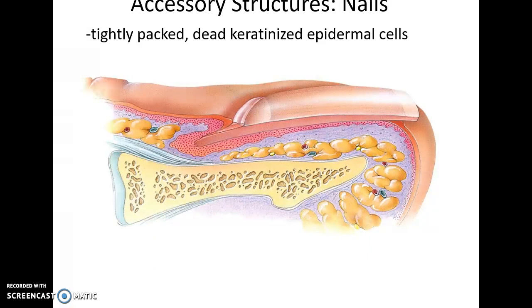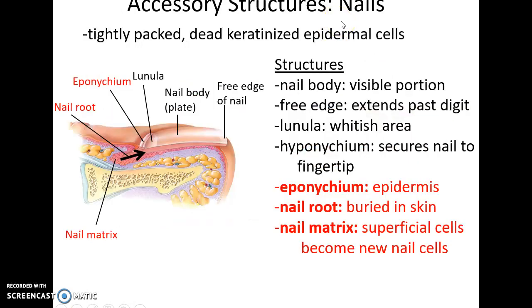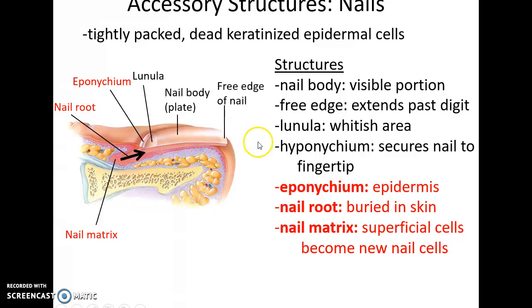Nails are also keratinized cells — keratinocytes packaged differently. The nail matrix is where cells divide and push forward into the nail root, which forms the nail body and eventually the free edge. The eponychium is the part of the epidermis lying on top of the nail. The hyponychium is the area under the nail's free edge that secures the nail to the fingertip. The lunula is the whitish area visible on your nails.